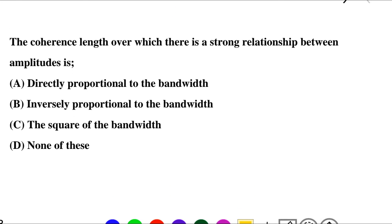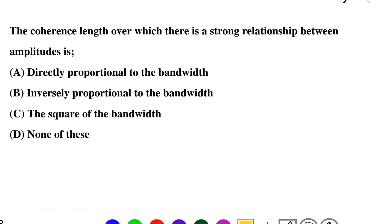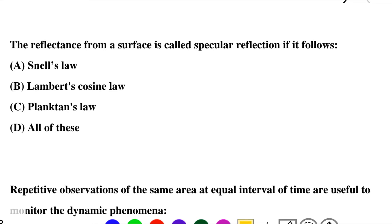Next question: the coherence length over which there is a strong relationship between amplitude is — option A: directly proportional to the bandwidth, option B: inversely proportional to the bandwidth, option C: the square of the bandwidth, option D: none of the above. So the correct answer is option B: inversely proportional to the bandwidth.